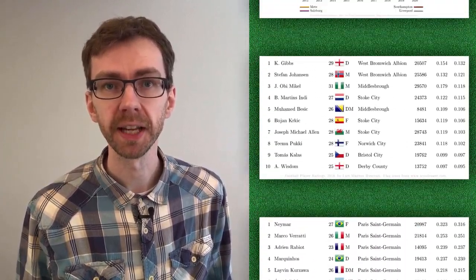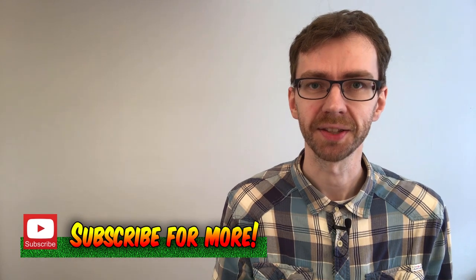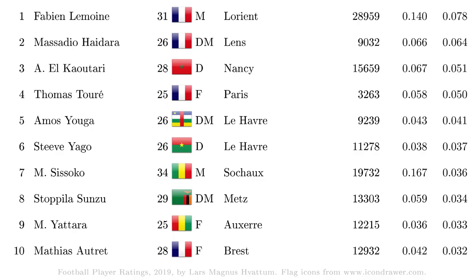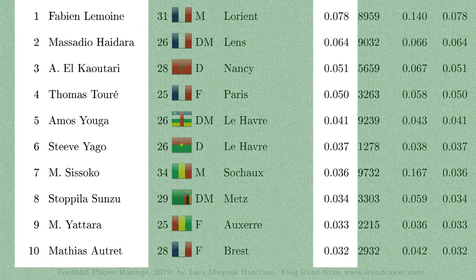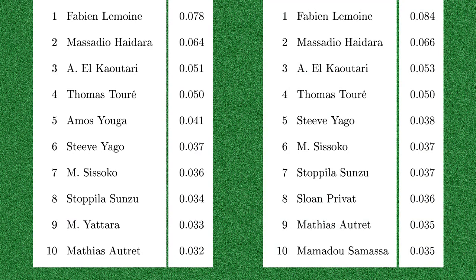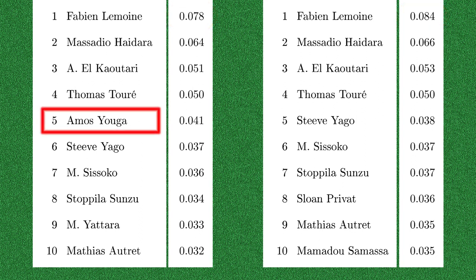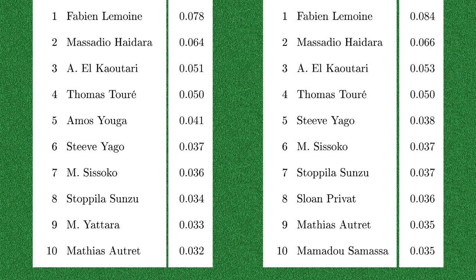So before I added National 1 to the database, I made sure to get rating lists and other data from the aforementioned leagues. Then, after adding National 1 and doing some recalculations, it's time to do some comparisons. Here we see the top 10 players in League 2 before adding National 1 to the database. After adding National 1, the list changes a bit. In particular, we notice that the rating of Fabien Lemoy increases from 0.078 to 0.084. We also see that Amos Ljuga disappears from the top 10 — he moves from number 5 to number 14, as his rating goes from 0.041 to 0.031, as a result of observations from about 2,500 minutes of playing time in National 1. So there are some changes to the ratings of players in League 2, but they are relatively modest.